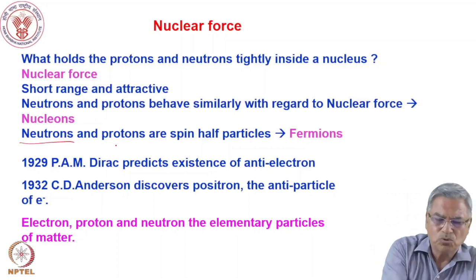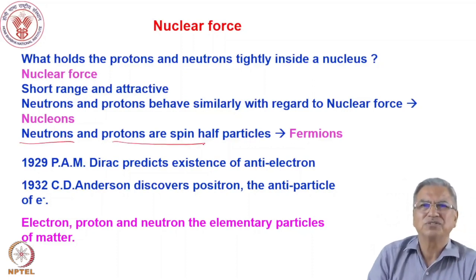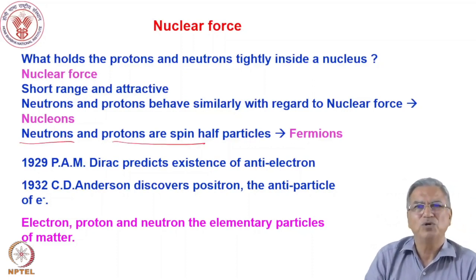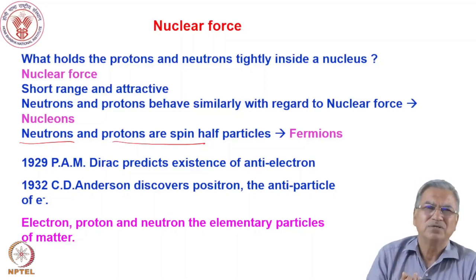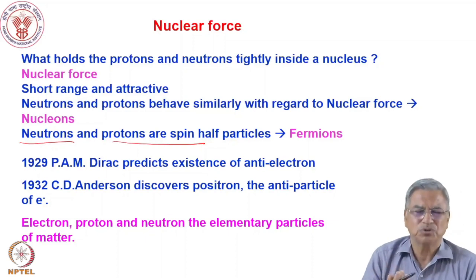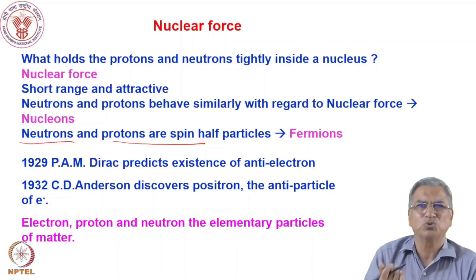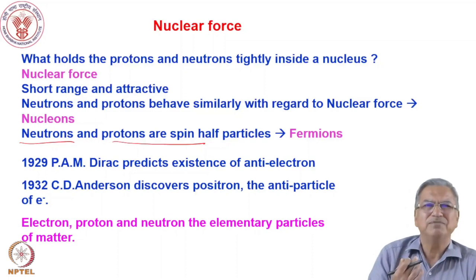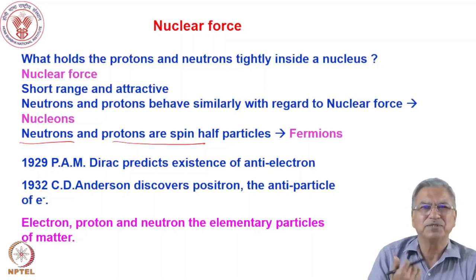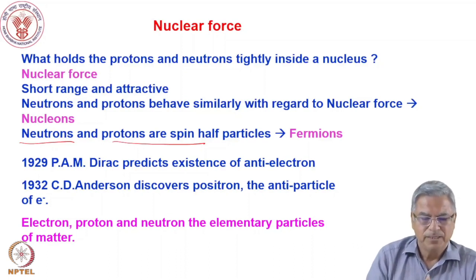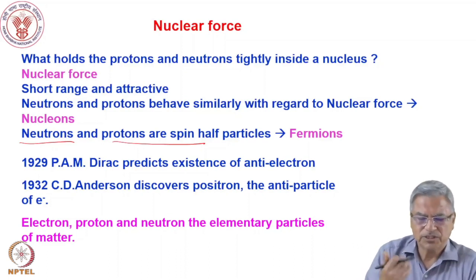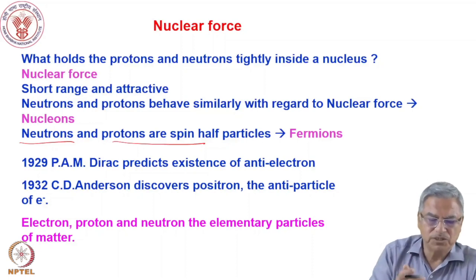Neutrons and protons are spin-half particles, so they are called fermions. Spin-half particles are called fermions and spin-1 particles are called bosons; integral spin particles are called bosons. Nuclei having half-integral spins will follow Fermi-Dirac statistics. We will also discuss later on the implications of these discoveries.